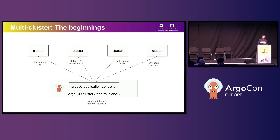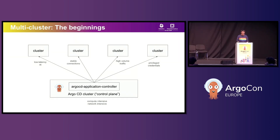For those of you who've been around the Argo community for a while, you might remember that in the beginning there was just a single application controller pod. You had this one lone single pod that you could configure with appropriate credentials to reach out to remote clusters and reconcile manifests there. This is a nice simple mechanism, especially if you only had a handful of clusters. There's no need for any configuration on the remote clusters except for providing a service account and appropriate RBAC.